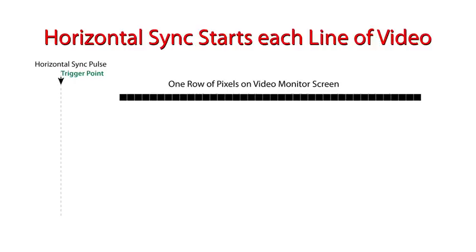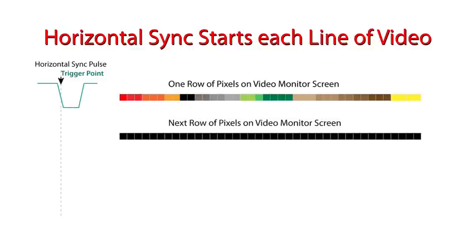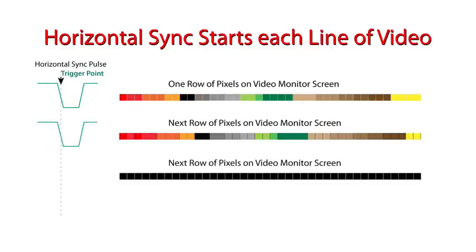When a horizontal sync pulse occurs, it triggers the monitor to display the video line. This occurs over and over again for every horizontal line that carries picture information.